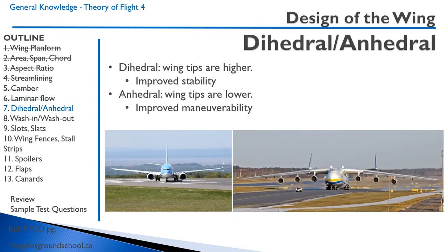Let's talk about dihedral and anhedral. Dihedral is where the wingtips are higher than the wing root. Aircraft have this dihedral to improve stability. Anhedral is where the wingtips are lower, and this is done to improve maneuverability. It's often done on high-wing cargo aircraft where there is significant weight in the aircraft and a lot of keel effect — similar to a keel in a sailboat — so you need to make the aircraft less stable to make it more maneuverable.